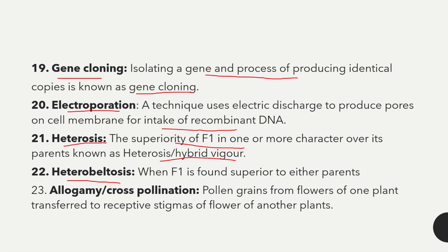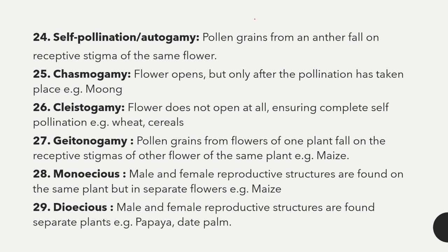Heterobeltosis refers to when the F1 is found superior to either of the parents. Allogamy or cross pollination refers to pollen grains from one plant being transferred to the receptive stigma of another plant. Self-pollination or autogamy refers to pollen grains from one anther falling on the receptive stigma of the same flower.